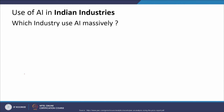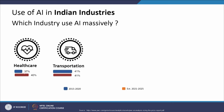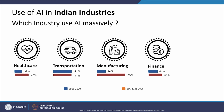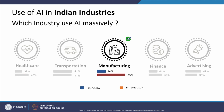Now let us look at the use of AI in Indian industry — which industry uses AI massively. Healthcare used AI 37 percent in 2015 to 2020, estimated 40 percent from 2021 to 2025. Transportation comes in at 41 percent each. Manufacturing shows a dramatic increase from 14 percent to 83 percent over a period of 10 years. Finance moved from 41 percent to 59 percent, and advertising from 47 percent is supposed to decrease to 36 percent. So manufacturing is the industry using AI most massively.